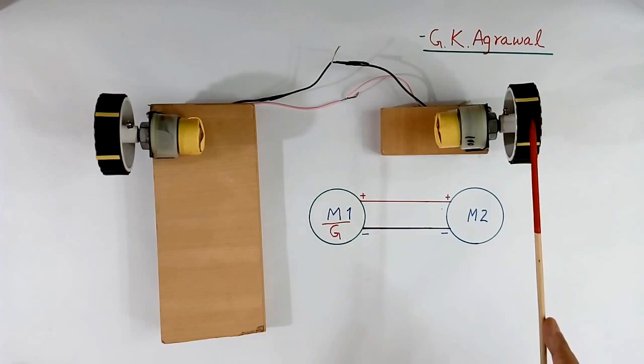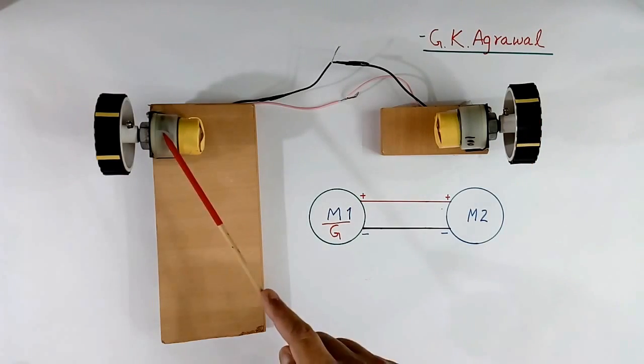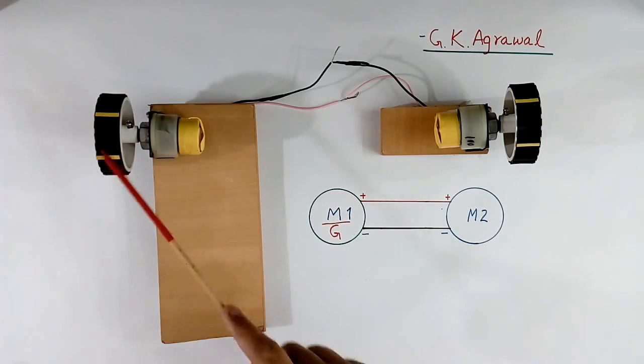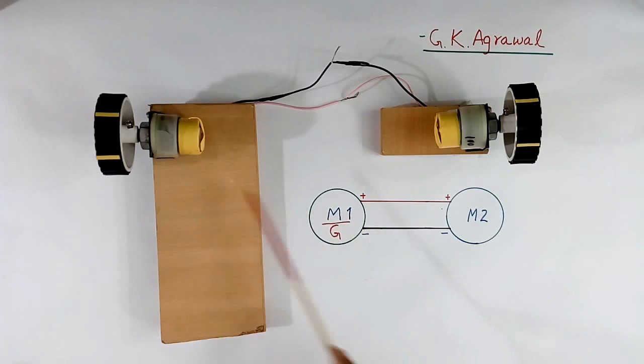This is motor M2 and this is the motor M1. So when we get the supply, the motor needs to go.